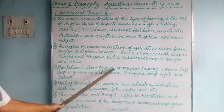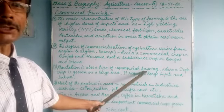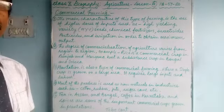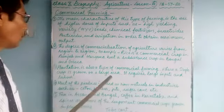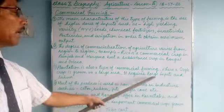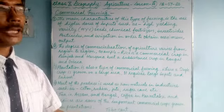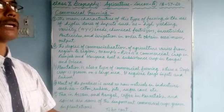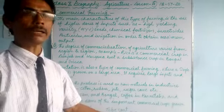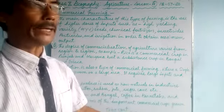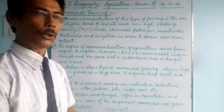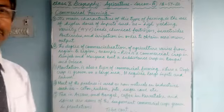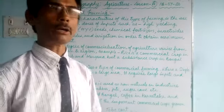Plantation is also a type of commercial farming, where a single crop is grown on a large area. Since farming is done on a large scale on a big piece of land, the inputs are naturally more. It requires large inputs as well as a large amount of labor.